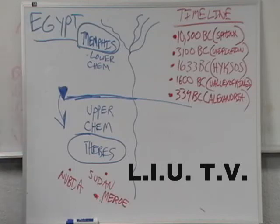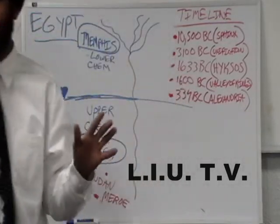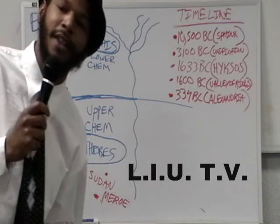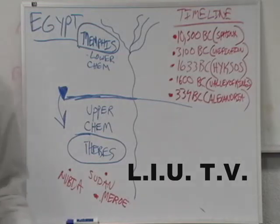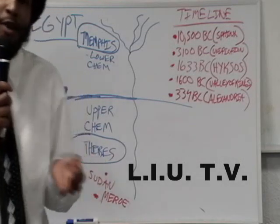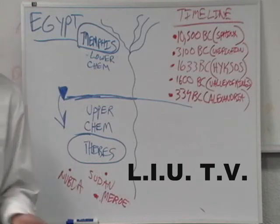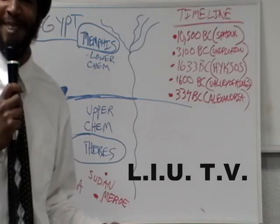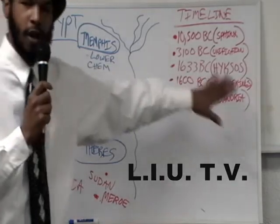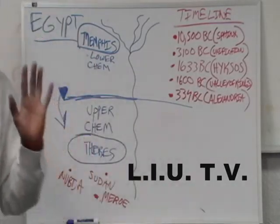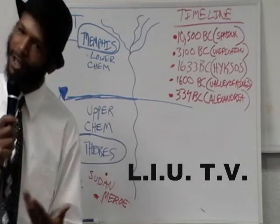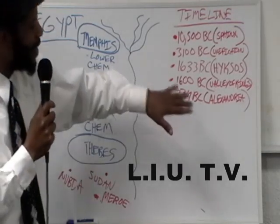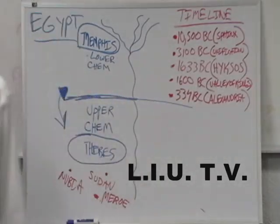Now, this is a claim, let me make that statement, that this is a claim that LIU is making, based off of the research of the honorable Dr. Chancellor Williams. We're going to make this assumption for this discussion that the descendants of the Hyksos are the Greeks.